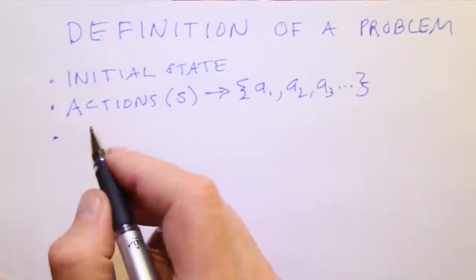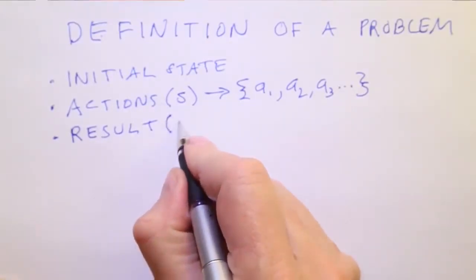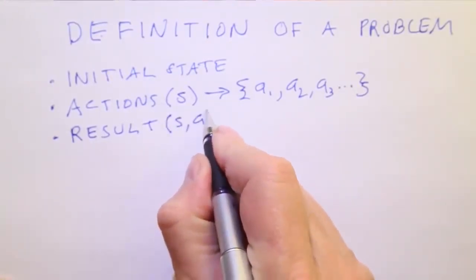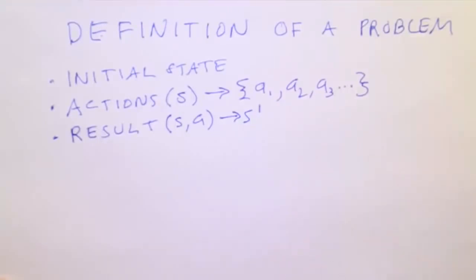Next, we have a function called result, which takes as input a state and an action and delivers as its output a new state. So for example, if the agent is in the city of Arad, that would be the state, and takes the action of driving along route E671 towards Timisoara, then the result of applying that action in that state would be the new state where the agent is in the city of Timisoara.